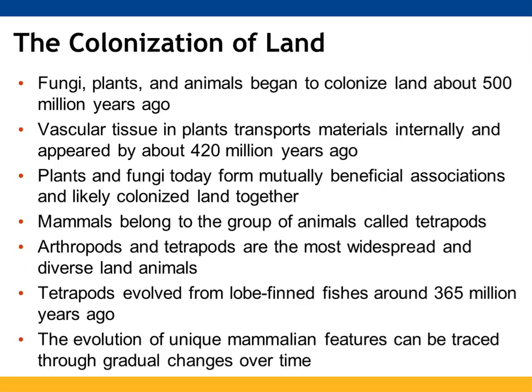Fungi, plants, and animals first started to colonize land about 500 million years ago. Plants use vascular tissue to transport materials within the plant, and these showed up about 420 million years ago. Both fungi and plants have formed mutually beneficial associations, so they probably colonized land together. Mammals are part of the group of animals known as tetrapods. Both arthropods and tetrapods are the most widespread and diverse land animals, and tetrapods are thought to have evolved from lobe-finned fishes about 365 million years ago.